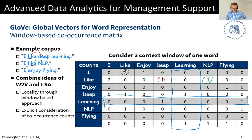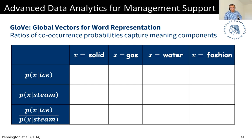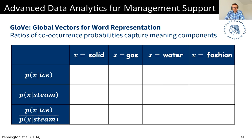GloVe starts from the co-occurrence matrix, but rather than looking at raw co-occurrences, it looks at ratios of co-occurrence probabilities. These probabilities are estimated by means of counts through the corpus using some window. The authors of the GloVe paper argue that these ratios capture interesting components of meaning.